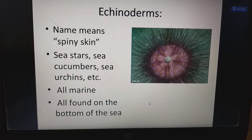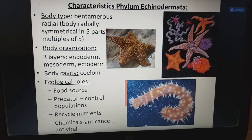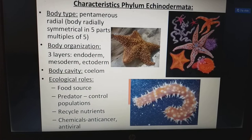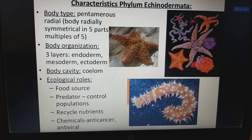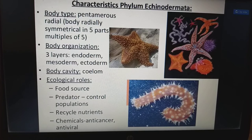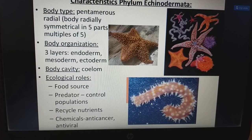The body plan is pentamerous, meaning radially symmetrical in five parts or multiples of five. The body organization has three layers: endoderm, mesoderm, and ectoderm. The body cavity is coelom. Ecological roles include acting as a food source, predators for controlling population, recycling of nutrients, and also providing chemicals for anti-cancer as well as antiviral uses.